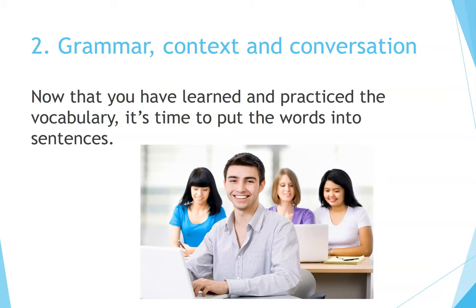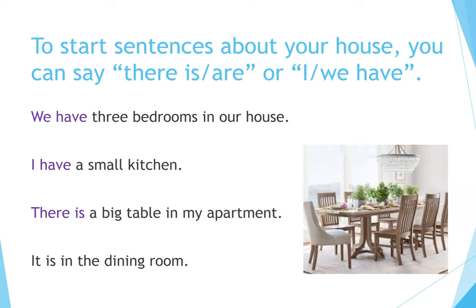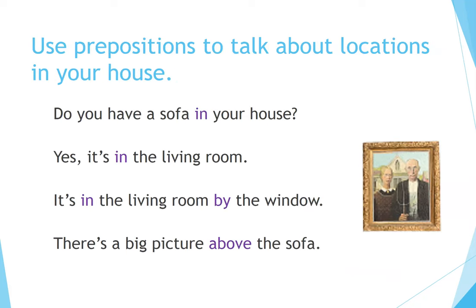Grammar, context and conversation. Now that you have learned and practiced the vocabulary, it's time to put the words into sentences. To start sentences about your house, you can say 'there is' or 'there are,' or 'I have' or 'we have.' For example: We have three bedrooms in our house. I have a small kitchen. There's a big table in my apartment. It's in the dining room.